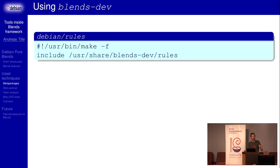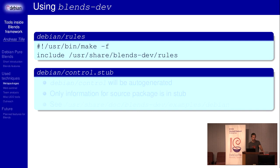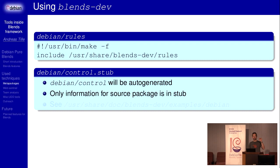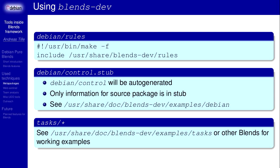How does it work? You just use a very simple rules file — you include the rules file which comes with blends-dev, and that's all you need to do. It uses DH and you can also use some overrides, but in principle that's not necessary. Then you provide just the stub of a control file; the whole control file will be auto-generated with a note saying 'don't edit it.' This stub contains only information about the source package header. There are working examples — you can look at debian-astro, debian-gis, or debian-med: download the source and you will see a working example.